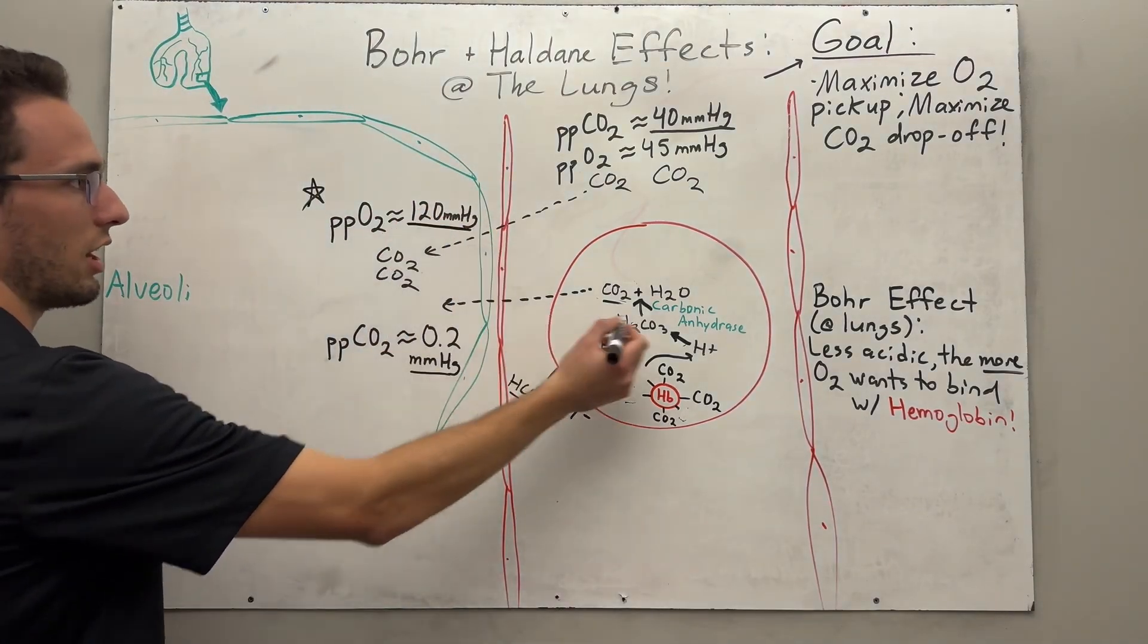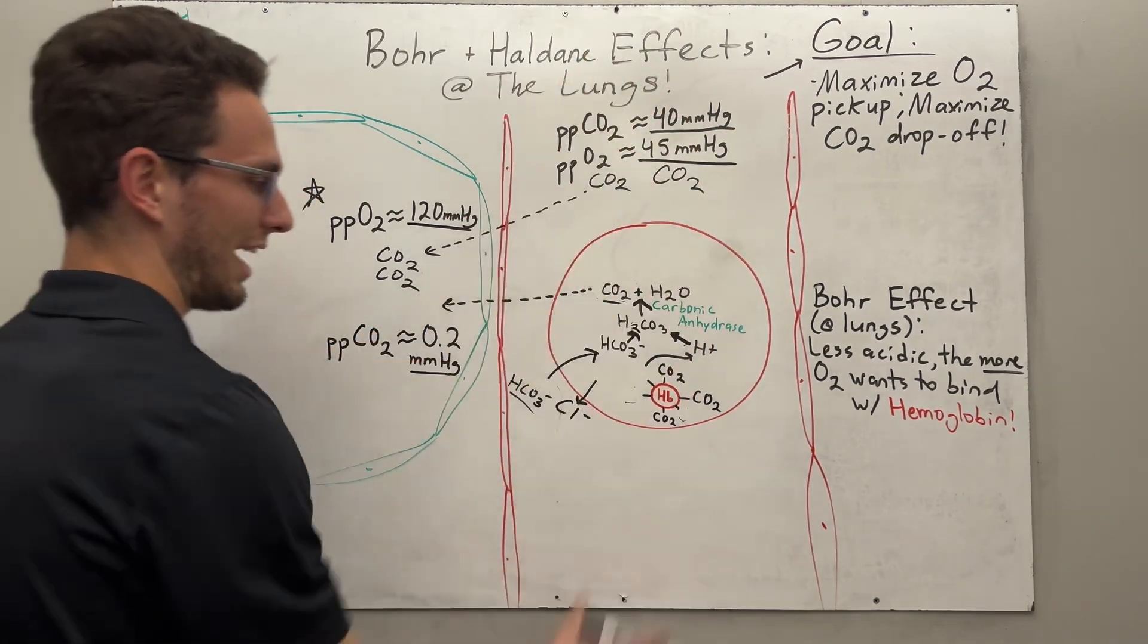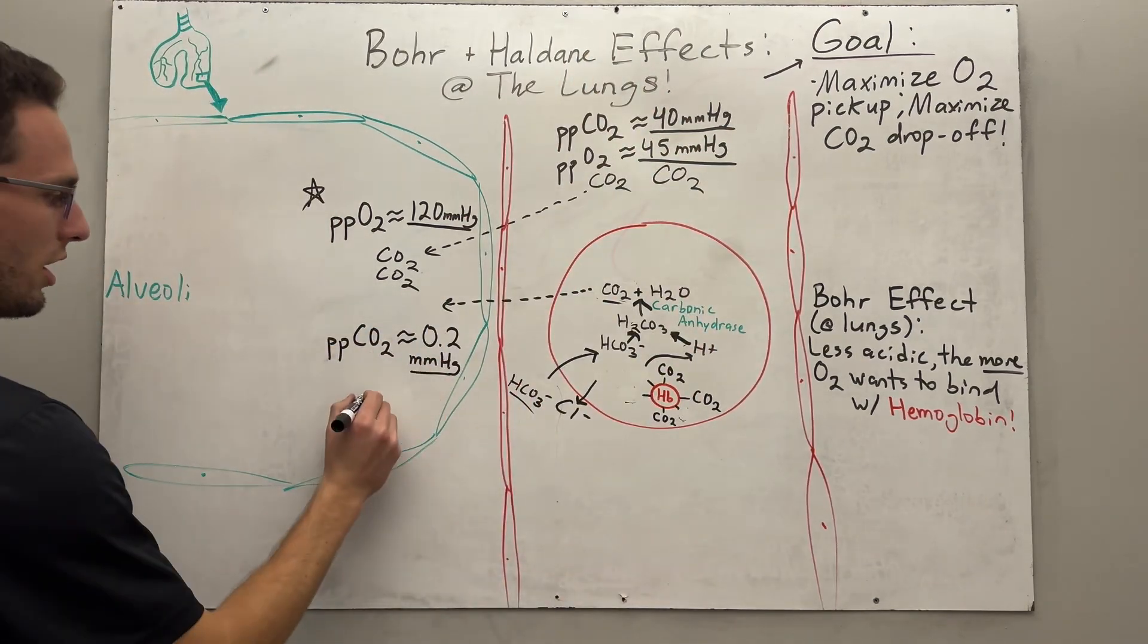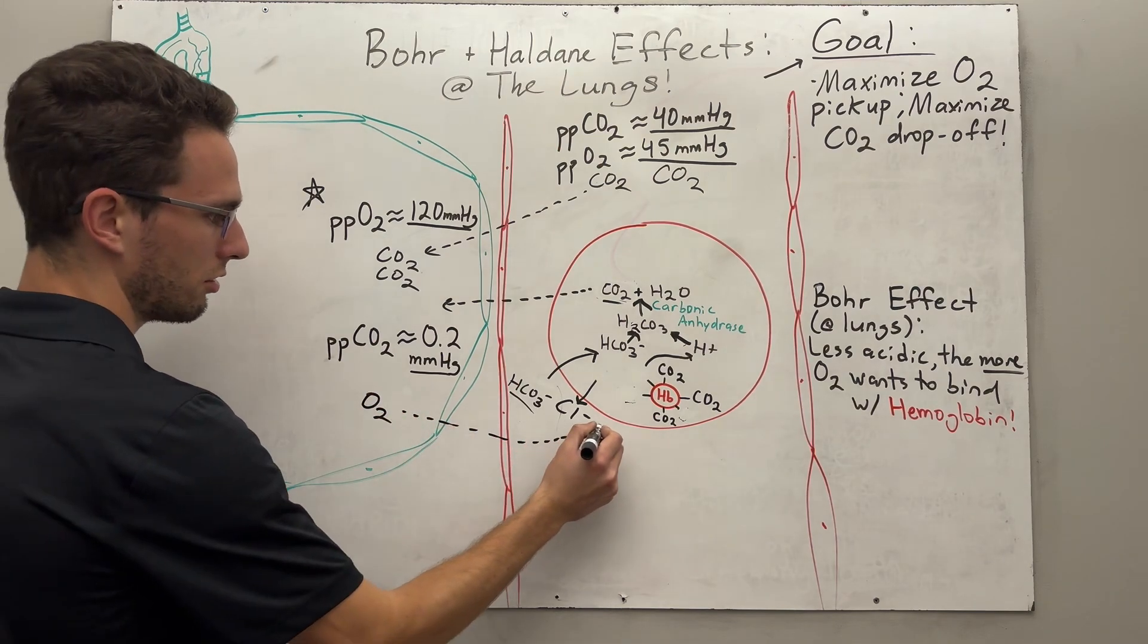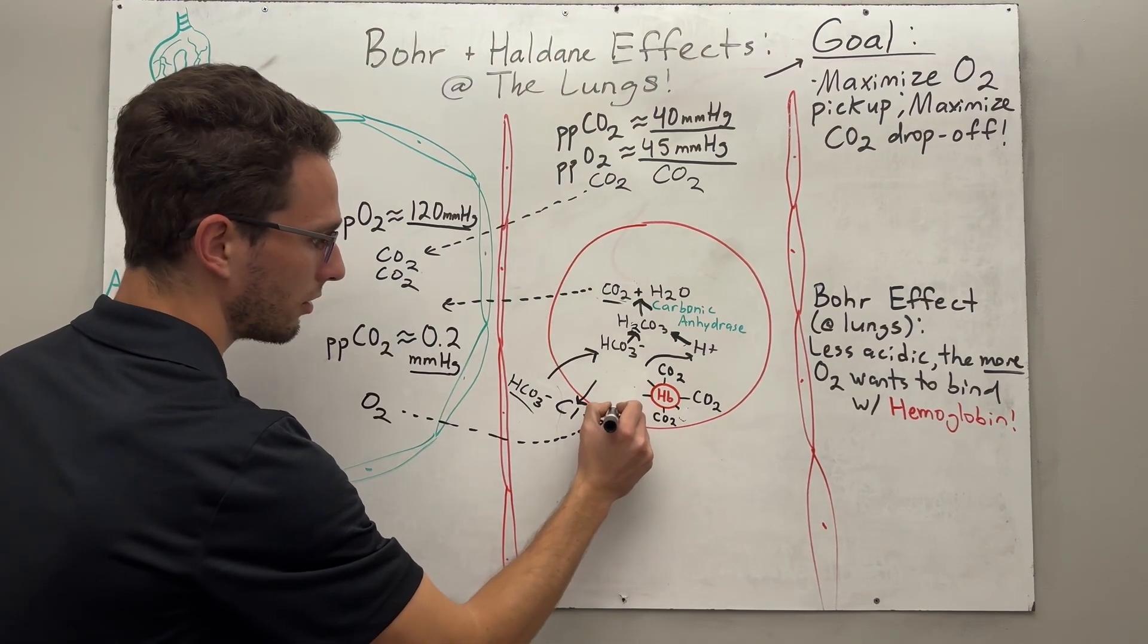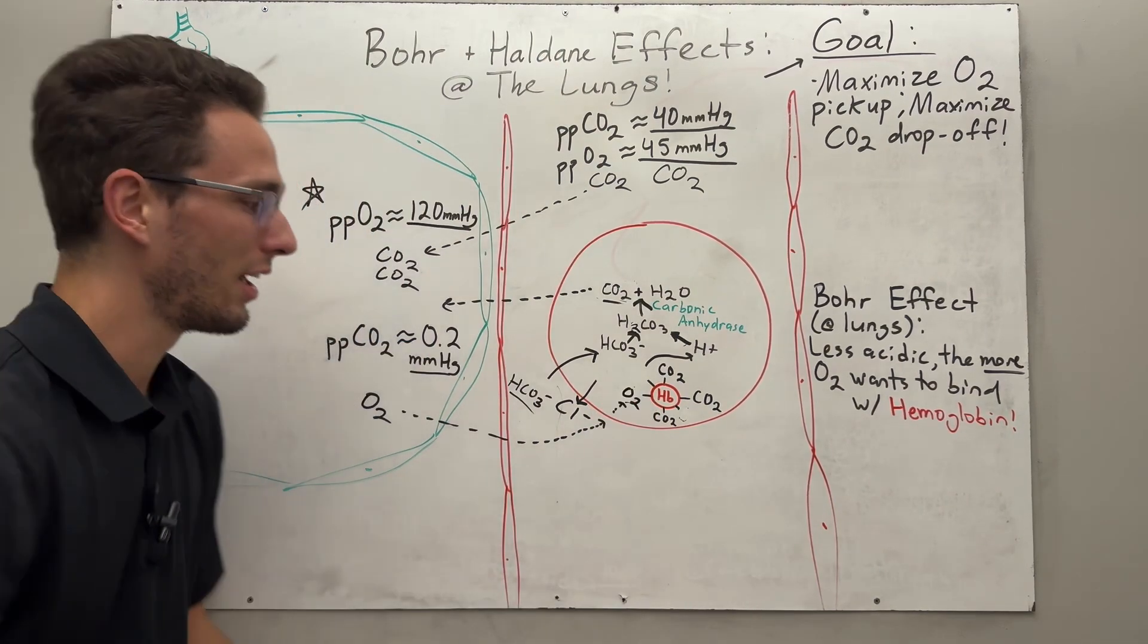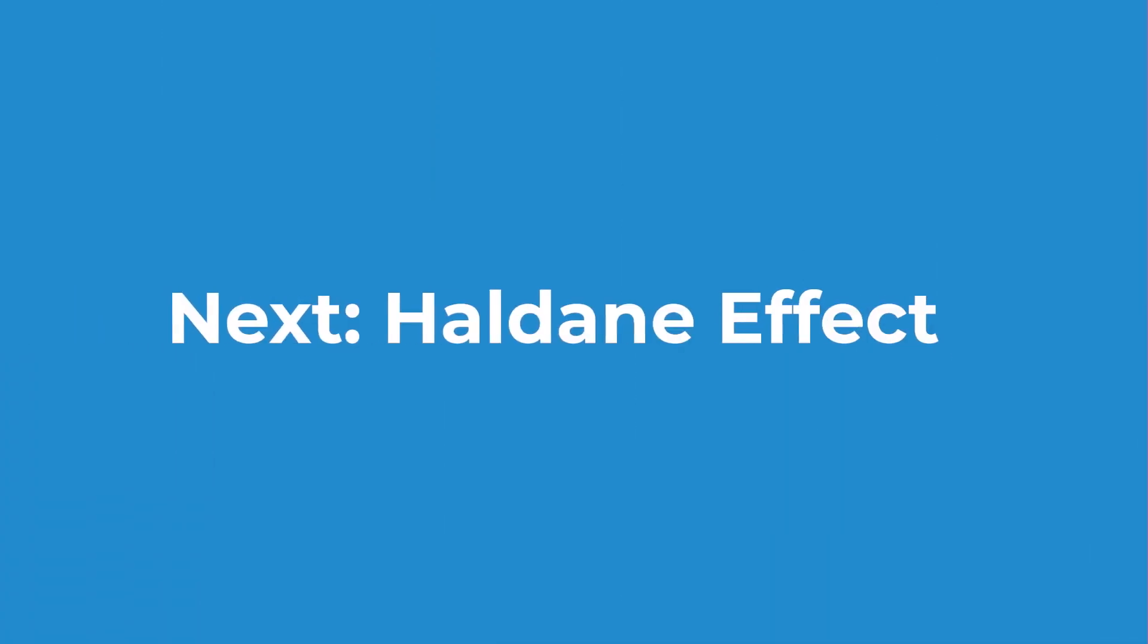So this oxygen, high pressure here, relatively low pressure in this bloodstream in the capillary, so therefore oxygen is going to want to diffuse high to low into this blood supply and then onto that hemoglobin molecule. Now remember, as oxygen begins to bind and bind and bind, we remember the Haldane effect.